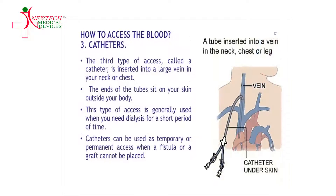The third type of access, called a catheter, is inserted into a large vein in your neck or chest. The ends of the tubes sit on your skin outside the body. This type of access is generally used when you need dialysis for a short period of time.